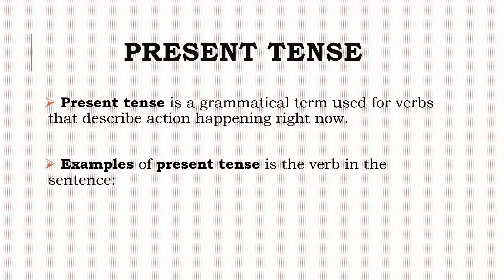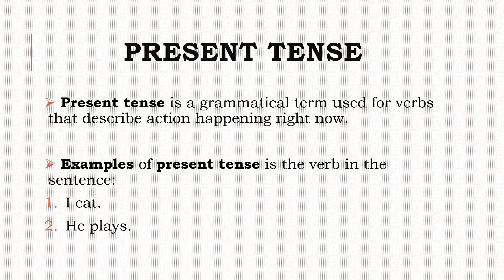Examples of present tense are seen through the verb in the sentence. Basically, the change of verb form tells you which tense it is. So in present tense, you use the first form of the verb. For example: I eat. He plays. They laugh. So here it tells you about the present tense — ke mein khata hoon, woh khelta hai, woh sab has rahe hai.